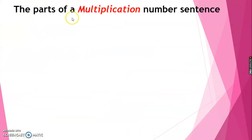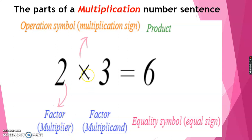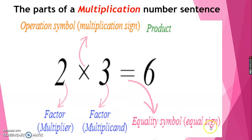The parts of a multiplication number sentence: 2 times 3 is equal to 6. 2 is the multiplier or factor. This sign is the multiplication sign. 3 is the multiplicand or factor.